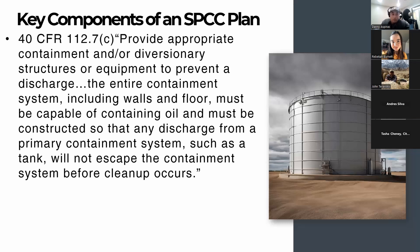40 CFR Part 112.7(a)(4) states: provide appropriate containment or diversionary structures or equipment to prevent a discharge. The entire containment system, including walls and floor, must be capable of containing oil and constructed so that any discharge from a primary containment system — such as a tank — will not escape before cleanup occurs. The regulations list examples of acceptable secondary containment: dikes, berms, retaining walls, curbing, drip pans, sumps, collection systems, retention ponds, and even sorbent materials.